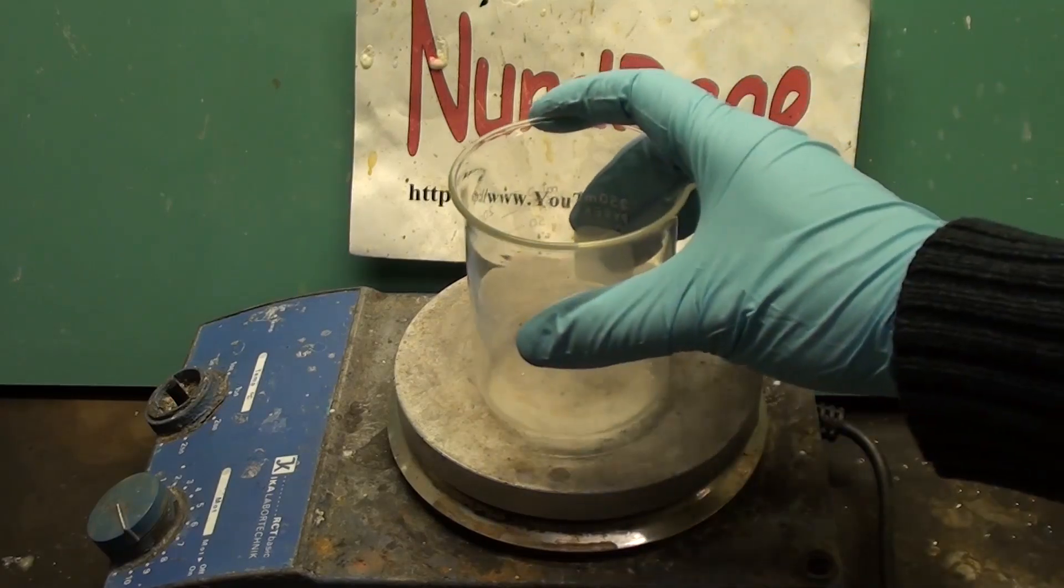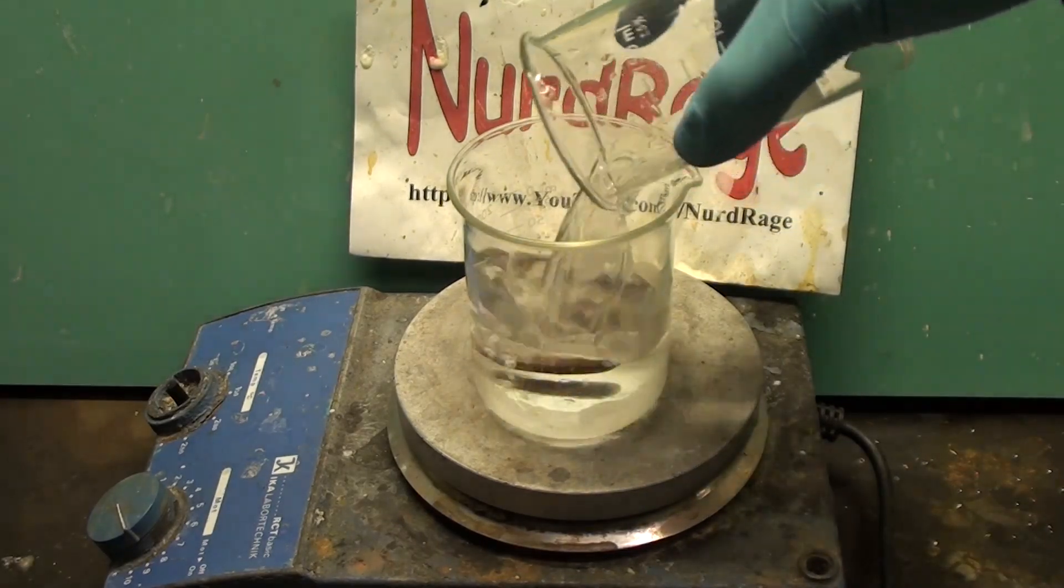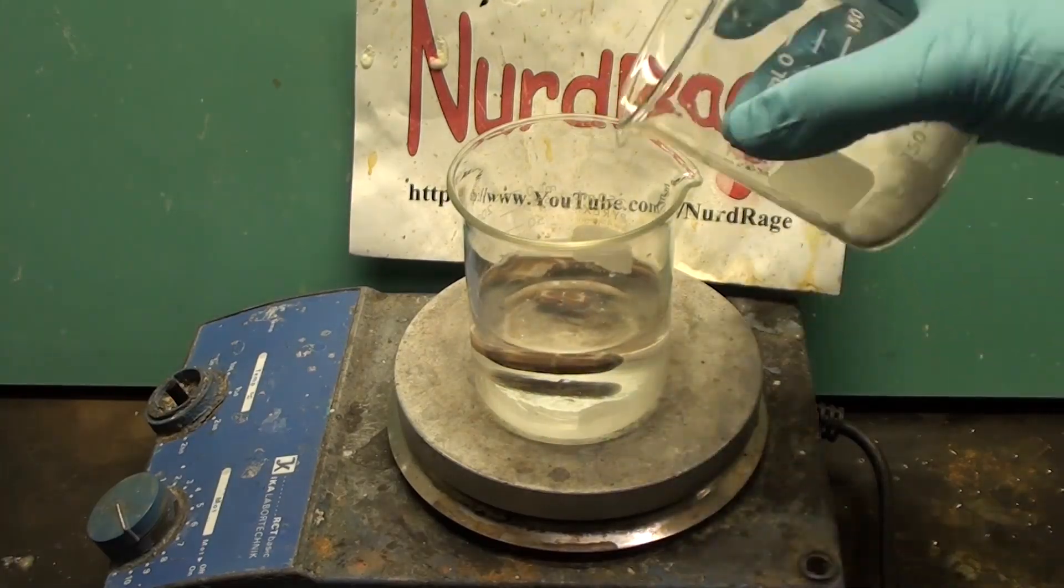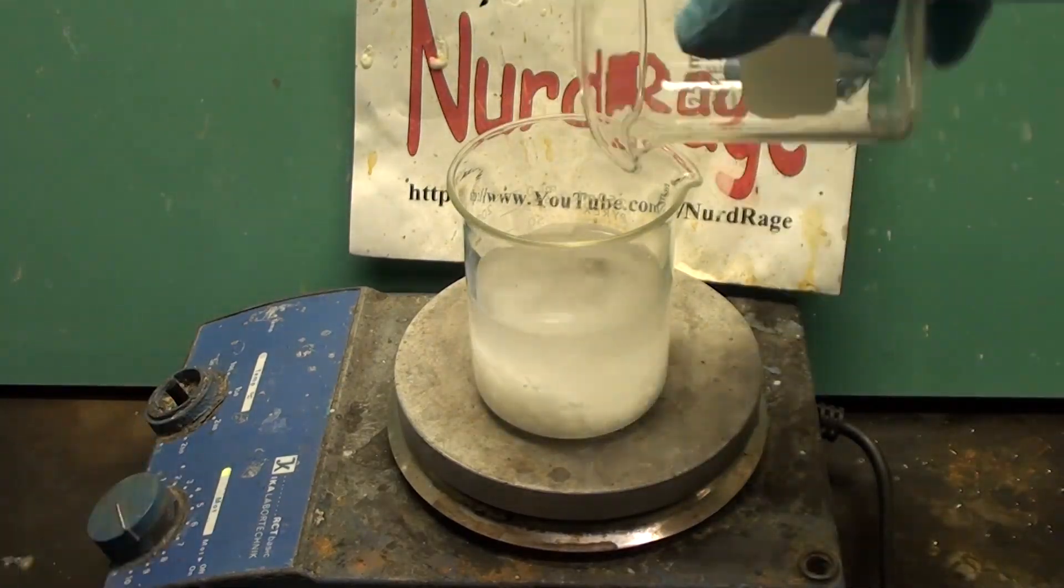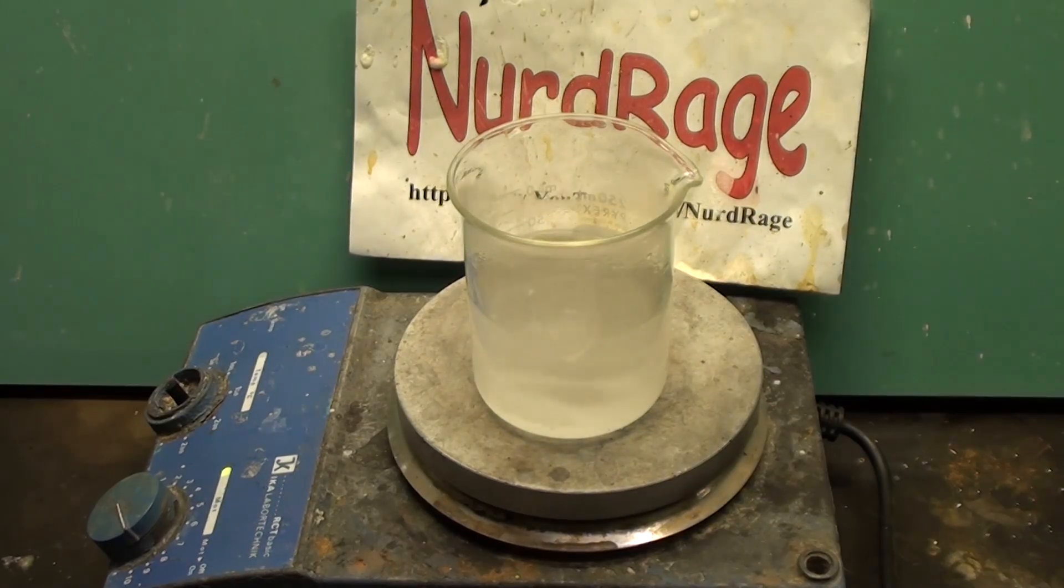First we make our sodium hydroxide electrolyte by getting 150mL of water and adding to it about 50g of sodium hydroxide. Stir the mixture until it dissolves. Be careful as the solution will get very hot.